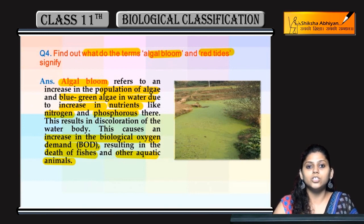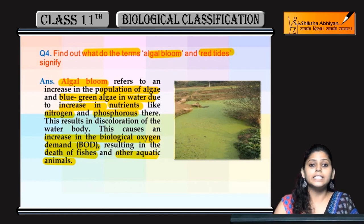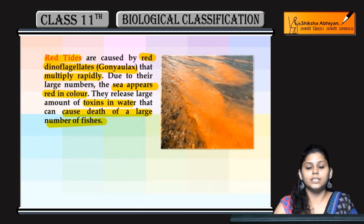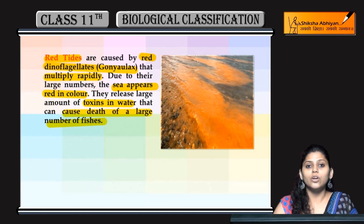To summarize: in algal bloom, algae production increases due to the presence of nutrients like nitrogen and phosphorus, which is why the biological oxygen demand increases, leading to the death of aquatic animals. In red tides, red dinoflagellates cause the sea to appear red and release toxins, which also causes the death of aquatic animals.